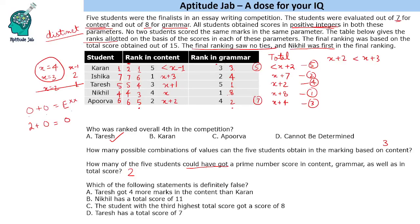Which statement is definitely false? Option A: Taresh got four more marks in content than Karan — possible in one case (1 and 5), so not definitely false. Option B: Nikhil has a total score of 11 — Nikhil's total is X plus 8; if X equals 3, the total is 11, so possible. Option C: The student with the third highest total got a score of 8 — the third total is X plus 4; if X equals 4, that's 8, so possible. Option D: Taresh has a total score of 7 — Taresh's total is X plus 2, which can only be 5 or 6, never 7. Hence this statement is definitely false.